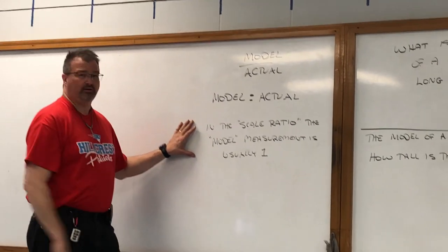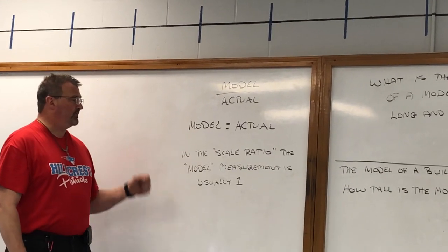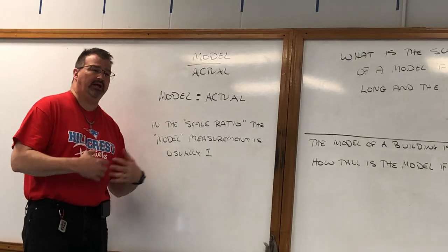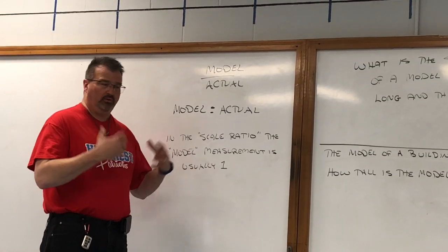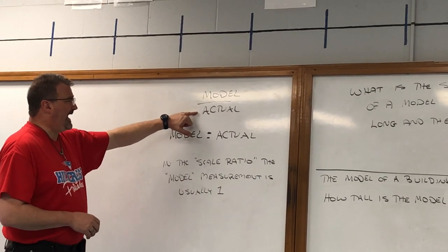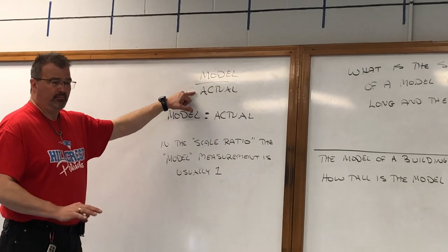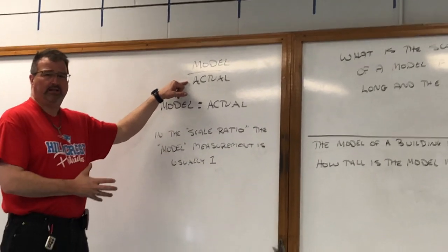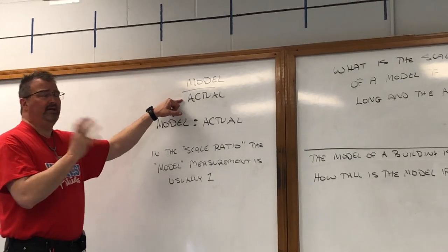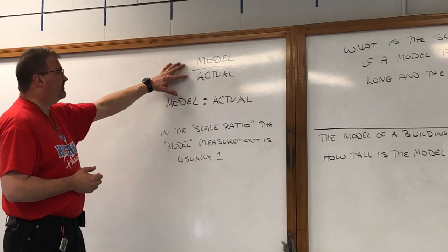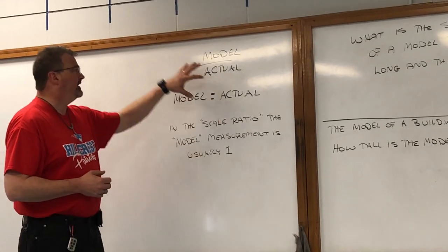It's important to remember, especially for the first calculation we're going to do, that in the scale ratio the model measurement — the top measurement or the first one — is usually going to be a one. Your scale ratio is going to be like 1 to 2 or something like that, with a one first. So again, scale ratio is a comparison of a model measurement to the actual measurement. That model can be a drawing, a map, or even a picture. As long as we have the model measurement compared to the actual measurement, and like I said, it can be written as a fraction — this is how we're going to want to do calculations.